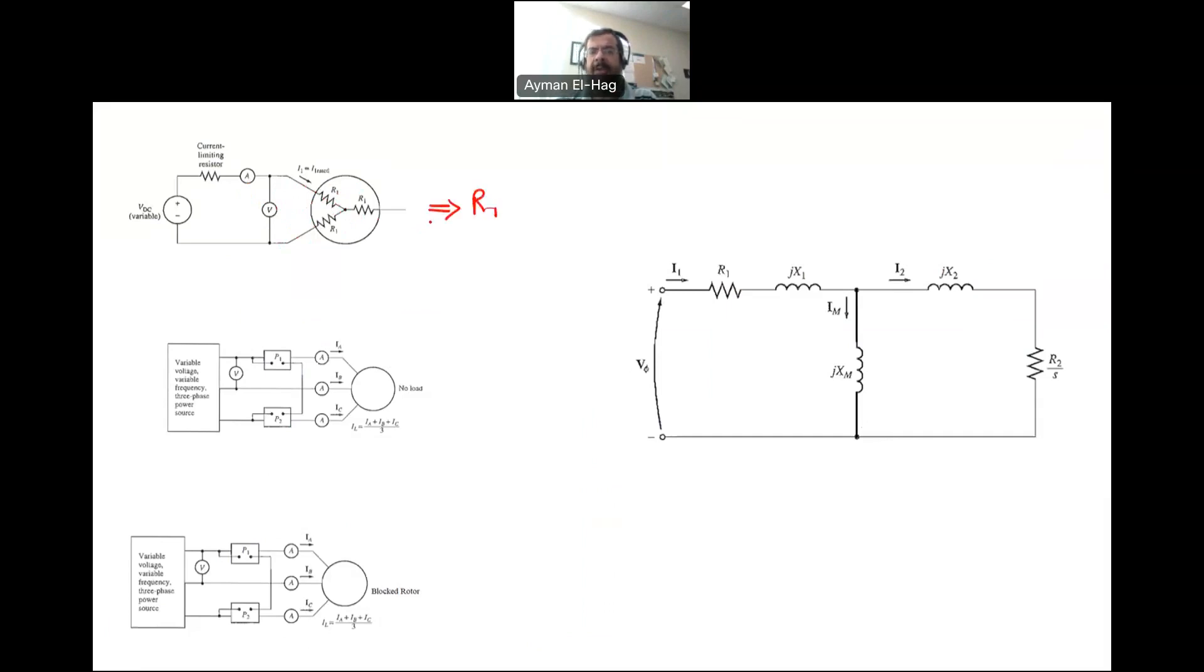Now, the no-load test will give us both X1 plus XM. It's not X1 and XM as individual values, but their summation. R1 comes from the DC test, X1 and XM summation from the no-load test.